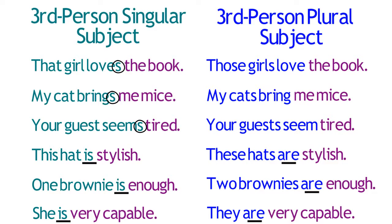Subject-Verb Agreement tends to be a common source of grammatical errors in student writing, especially as sentences grow in complexity. For this reason, it's important to learn how and when these changes in verb form take place in basic sentences.